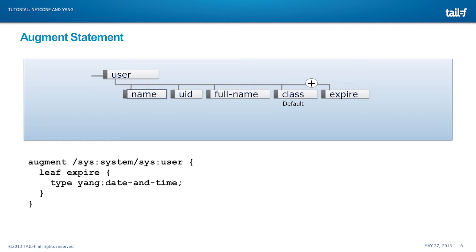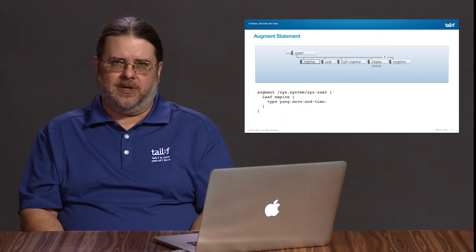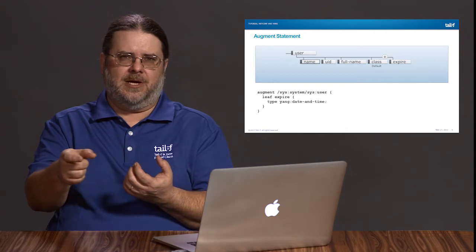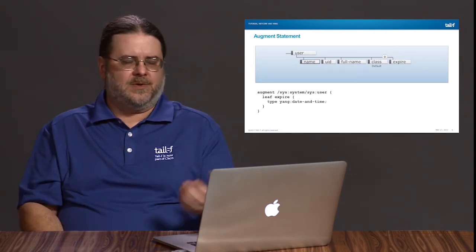If you remember from Yang Tutorial Part 1, we had an example of a basic user table of name, user ID, full name, and class of user. In our system, we want to take that standard user table and add an expiration date to that user information. So what we can do is import the module that has the user table, give it a prefix of SYS, and then in our module use the augment statement to say under system user for that user list, augment it with the expiry leaf. So you're adding this extra column to those rows in the user table by using the augment statement.